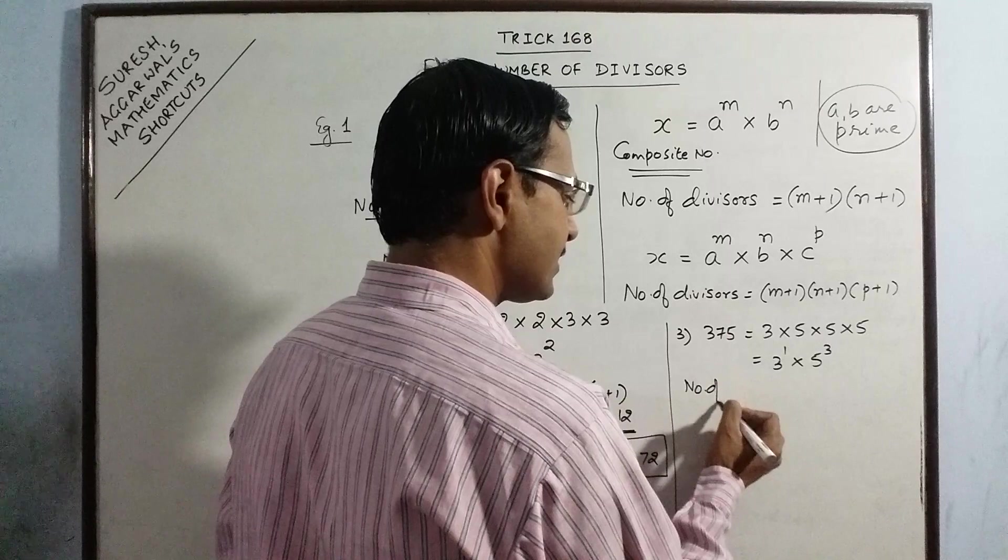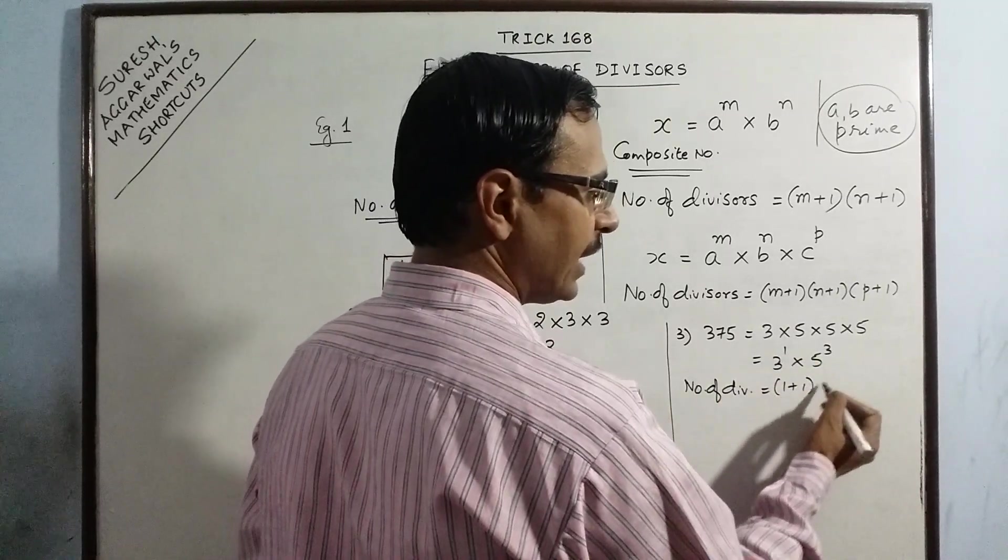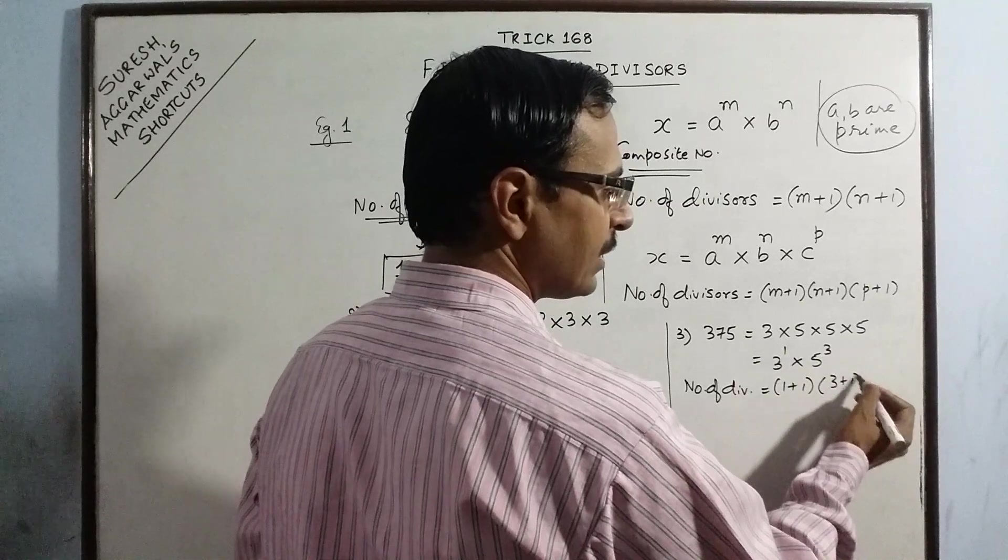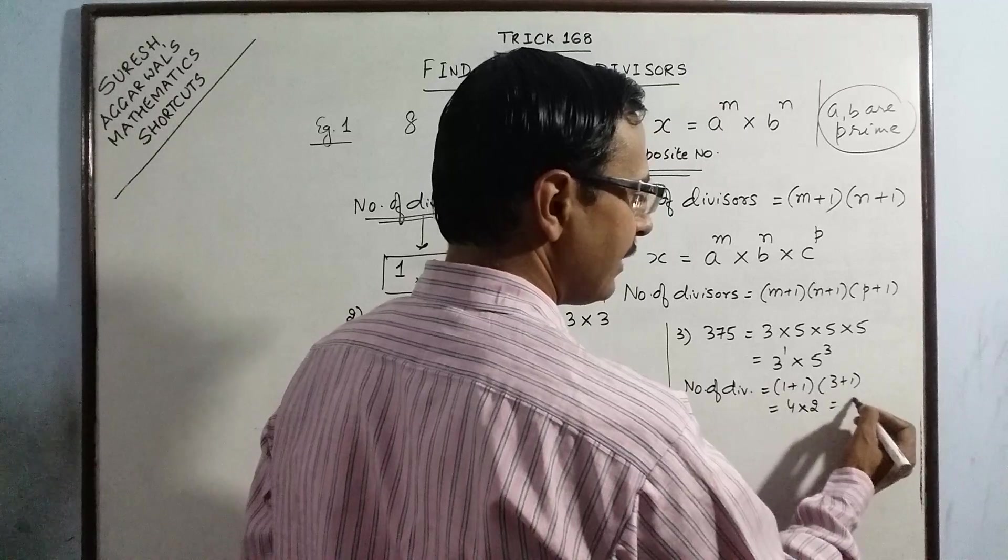That gives us 3 raised to power 1 and 5 raised to power 3. So the number of divisors is, this is power 1, so 1 plus 1 and this is power 3, so 3 plus 1. So 4, 3 plus 1, 4 into 1 plus 1, 2, so 8 divisors.